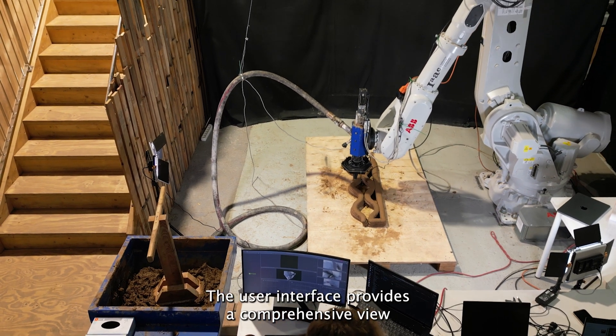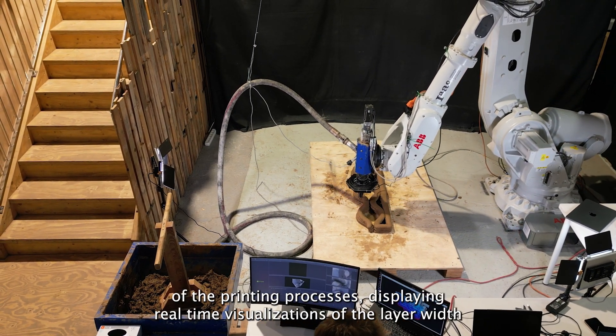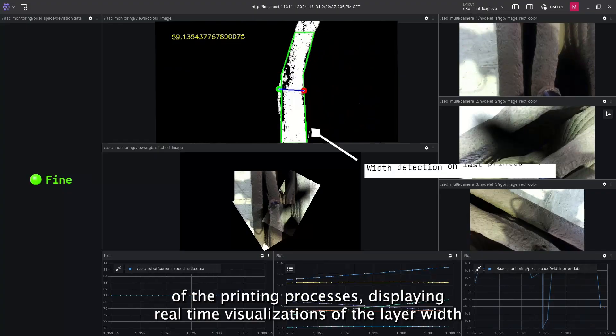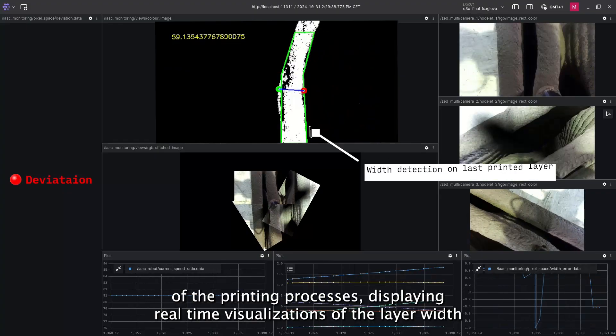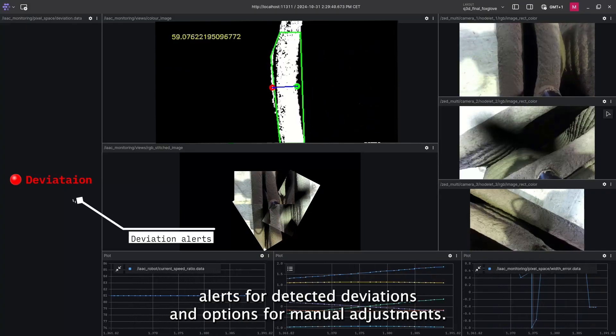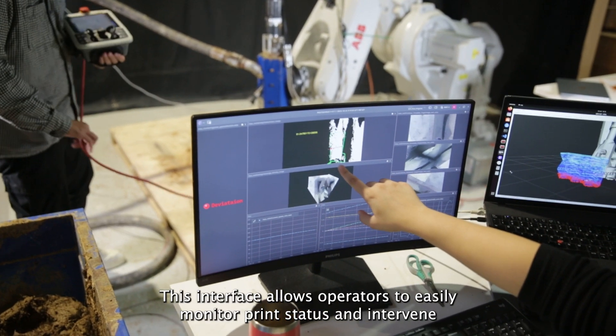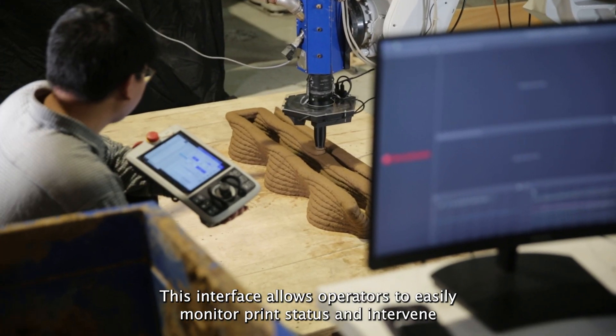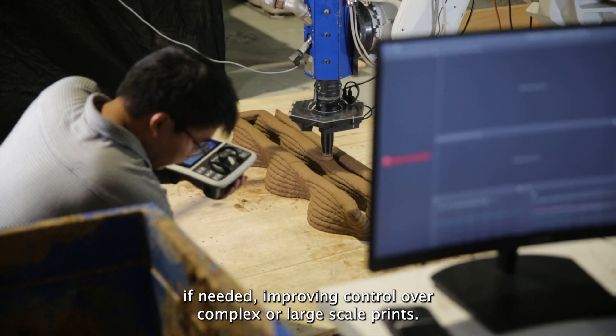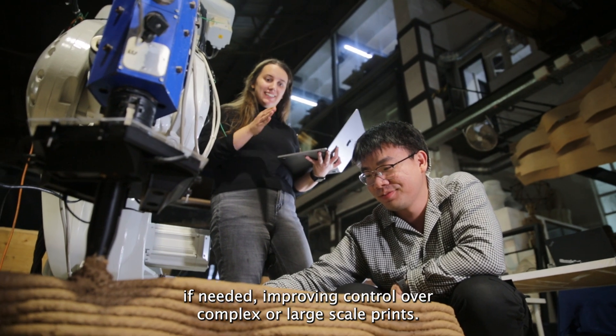The user interface provides a comprehensive view of the printing processes, displaying real-time visualizations of the layer width, alerts for detected deviations and options for manual adjustments. This interface allows operators to easily monitor print status and intervene if needed, improving control over complex or large-scale prints.